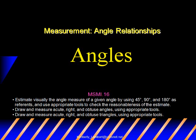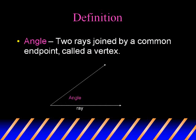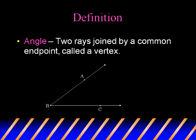This presentation is on angles, the measurement of angles, and angle relationships. The definition of angle is two rays joined by a common endpoint called a vertex. On the rays you may find different points labeled, and with those labels you can name your angles. So this angle can be named angle ABC, or simply by its vertex, angle B.